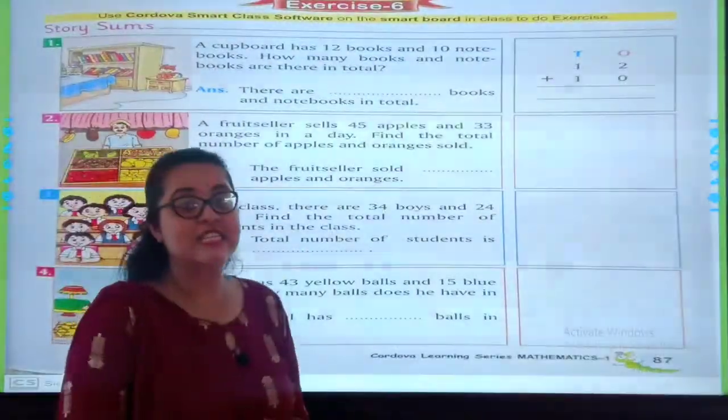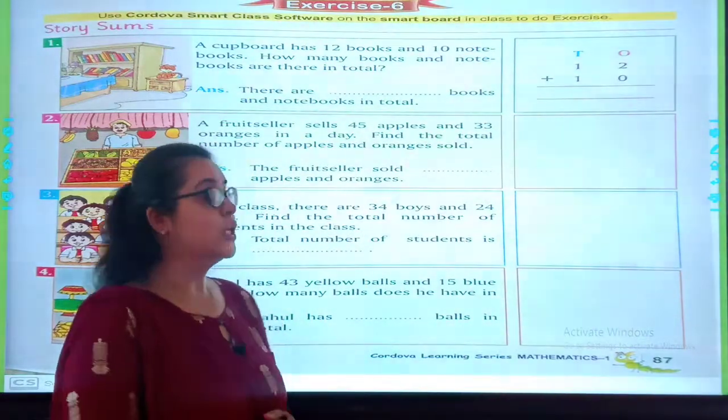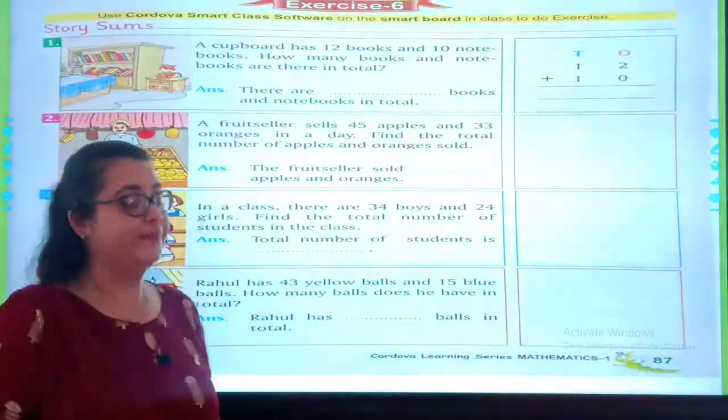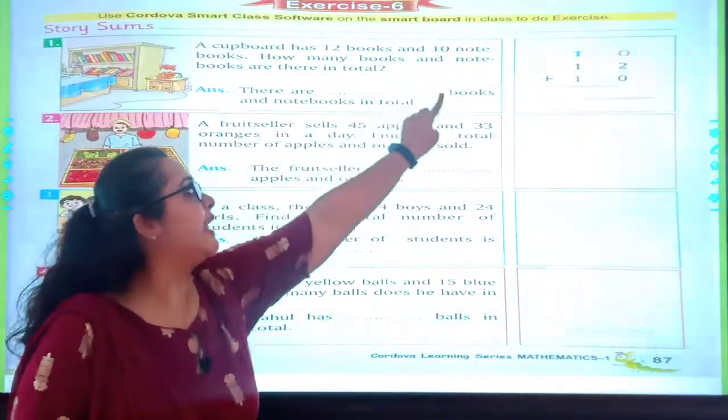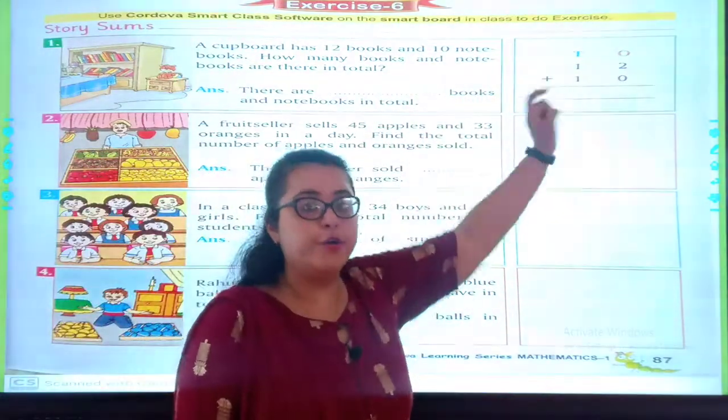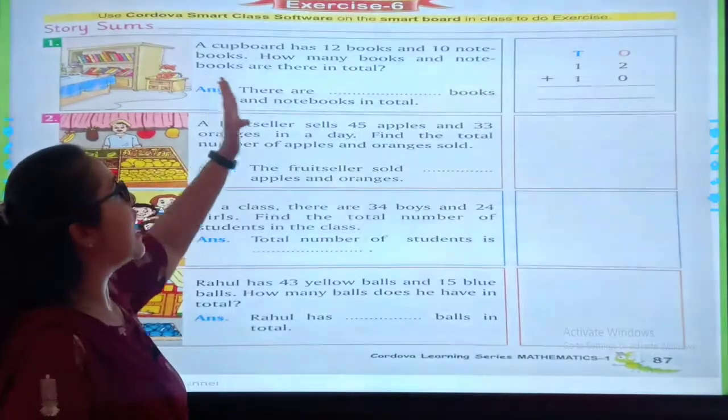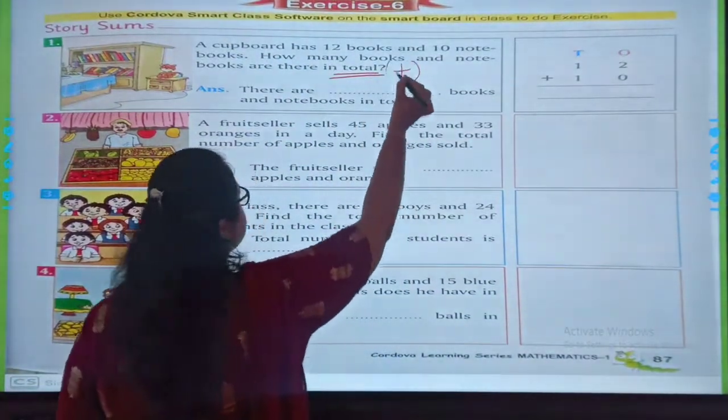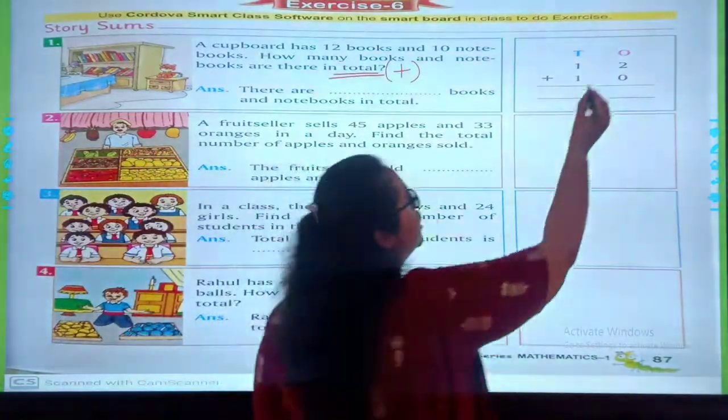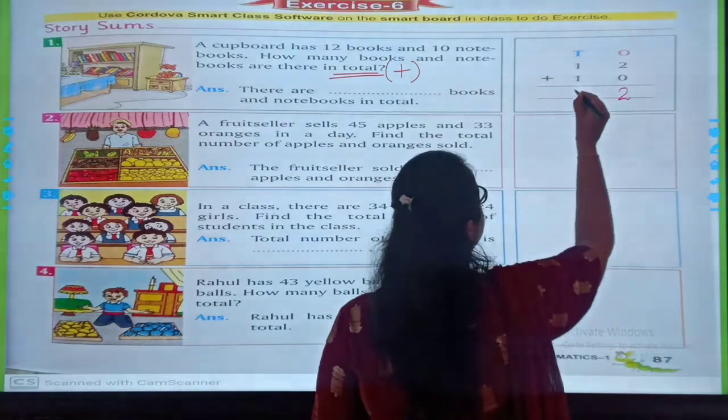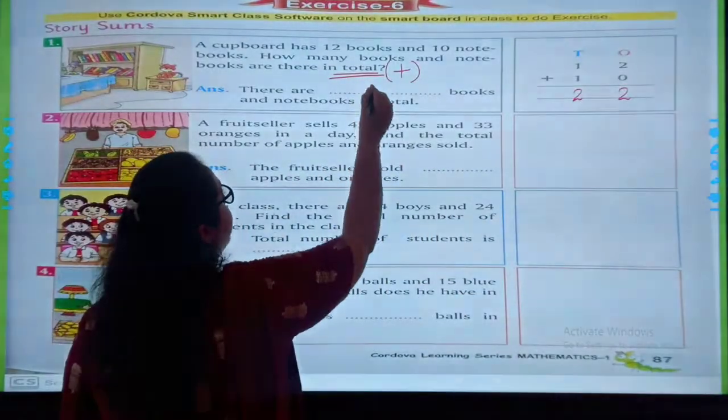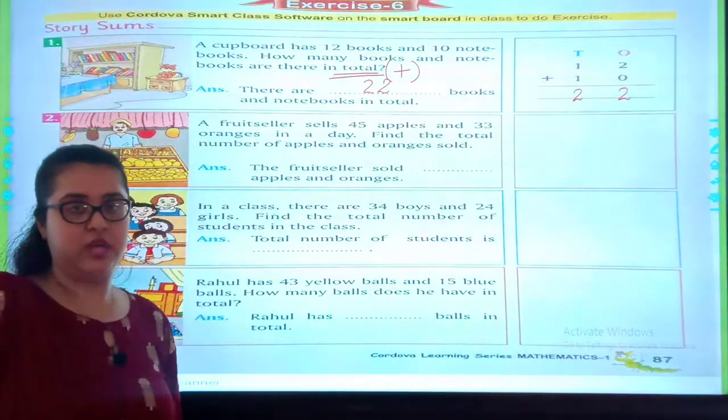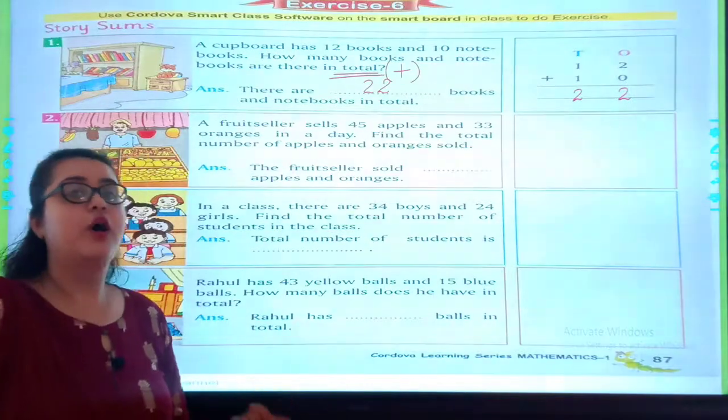Your exercise 6 is word problems or I can say story problems. We will read the question and then we will add in the column. Let's read the first one. A cupboard has 12 books and 10 notebooks. How many books and notebooks are there in total? When you see this question, you will understand that you are supposed to add.